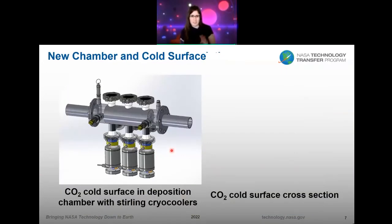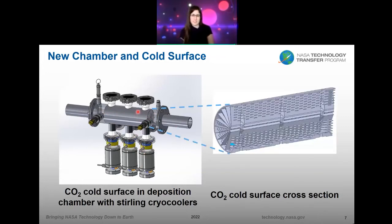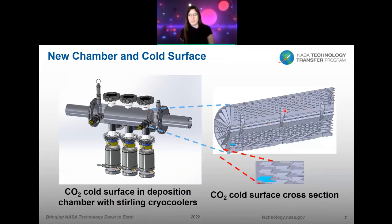Going back to the four-person scale system we're currently building — I wanted to zoom in on what the cold surface actually looks like. Here's the deposition chamber, and you can see the cold surface inside with three Stirling coolers thermally linked to it. Zooming in on this cold surface, you can see a cutaway of all of these chevron fins. We designed it this way to maximize the surface area to mass ratio, and also because we can 3D print it as one single piece out of copper alloy without any use of support materials. So it's easily installed into our system and ready to collect CO2.